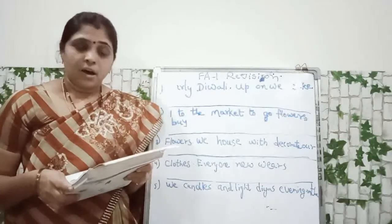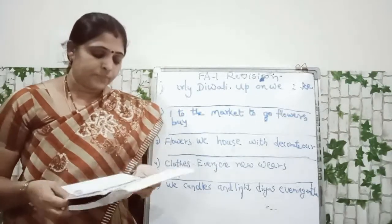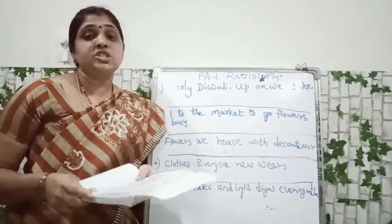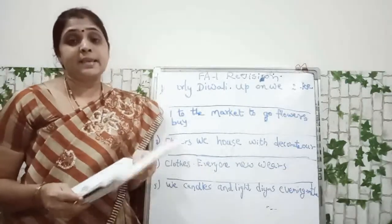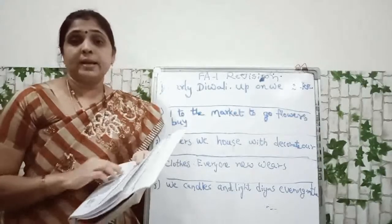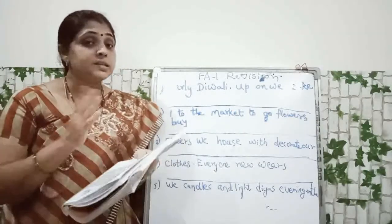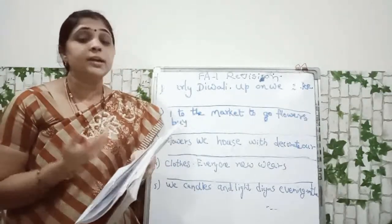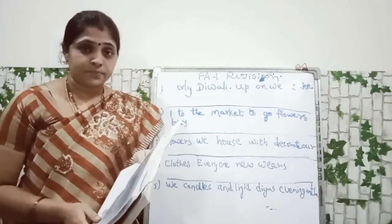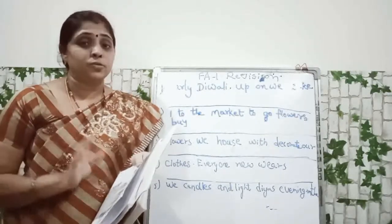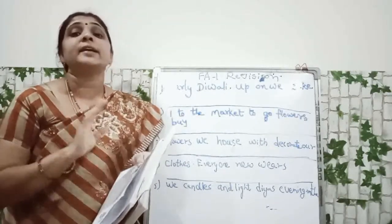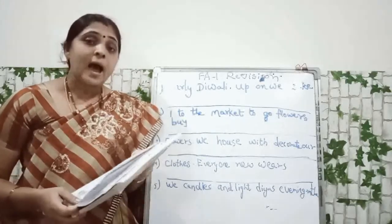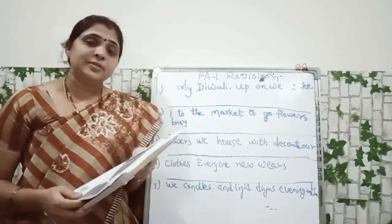Understood, children? Now, writing jumbled sentences. There are two sentences given. They are jumbled — there is no meaning. They have given sentences there. But you have to rewrite and correct the sentences. You have to combine those two sentences and make perfect sentences.